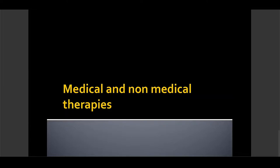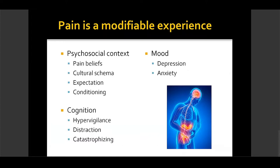Moving to medical and non-medical therapies: we must remember that pain is a modifiable experience. In both acute and especially chronic situations, pain perception is influenced by supraspinal processes — emotions, cognitions, and memories. These psychosocial effects and cognitive and mood factors can provide either a placebo effect — positive — or a nocebo effect — negative — depending on how the pain is interpreted.